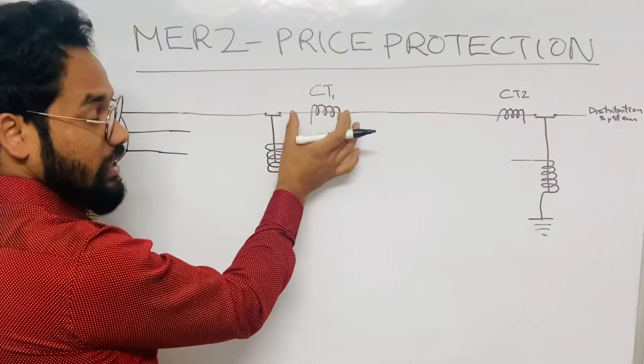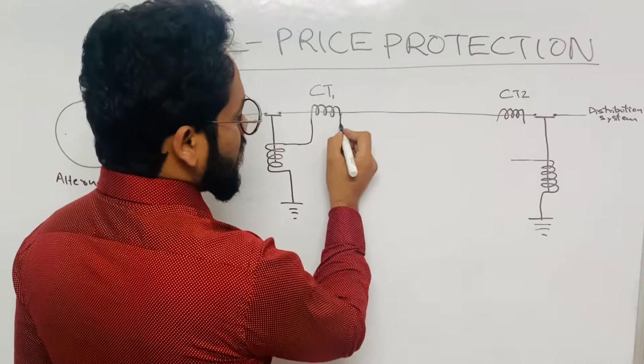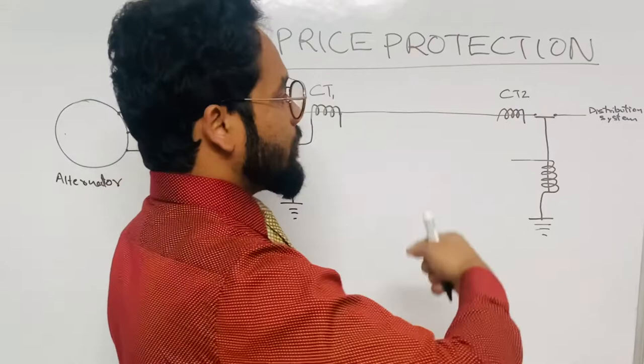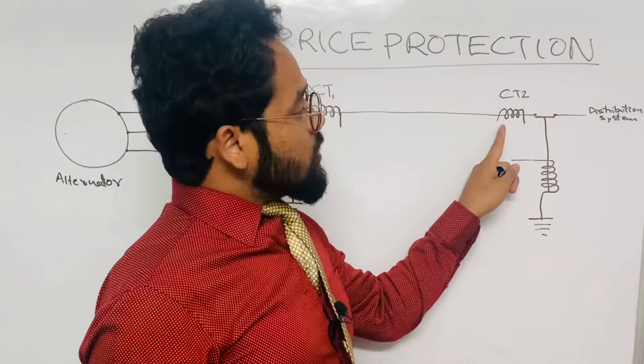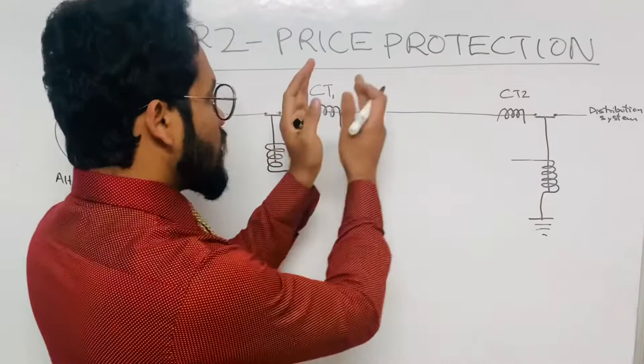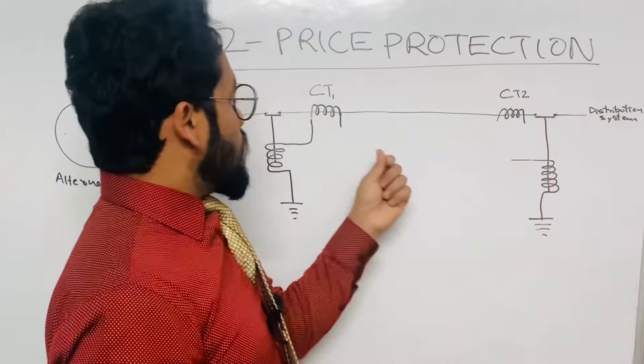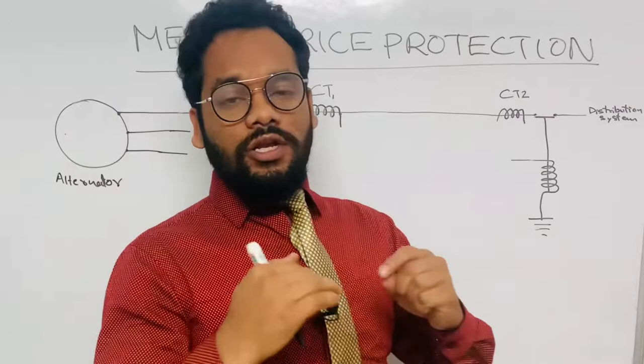CT1, placed near the source, monitors the current output from the alternator and is connected to the relay coil on that side. CT2, placed near the distribution system end of the feeder line, monitors the input current to the distribution system. So one current transformer is at one end of the feeder line and the other is at the other end towards the distribution system.